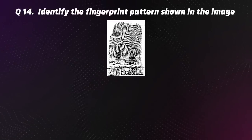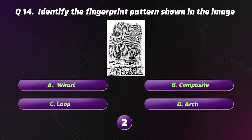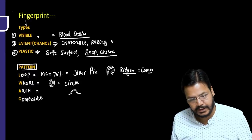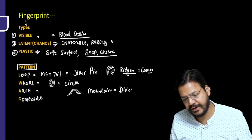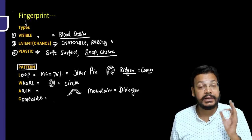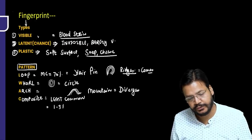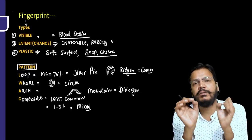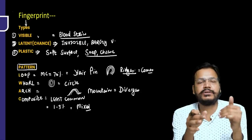Question 14. Identify the fingerprint pattern shown in the image. The correct option is D — Arch. Arches diverge like a mountain and have no core and no delta. Loop patterns converge toward each other — they have 1 core and 1 delta. Whorl patterns have 2 deltas but no core. Composite is the rarest (1–3% population) and is a mixed pattern. Most common fingerprint: Loop, then Whorl, then Arch, then Composite.